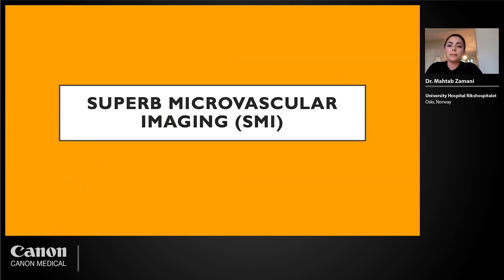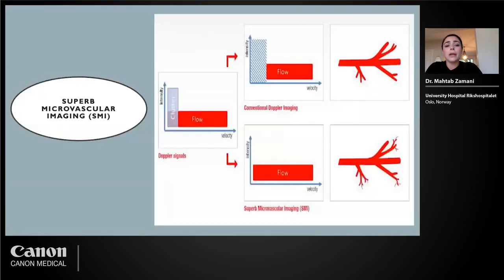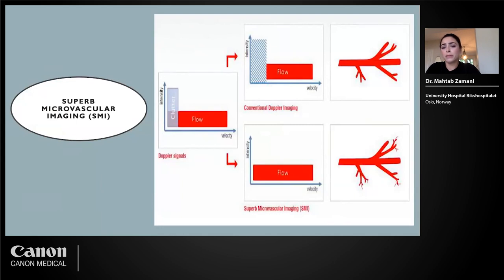Superb Microvascular Imaging (SMI) is a new method developed to overcome the limitations of conventional Doppler. It uses an exclusive algorithm — software on a normal Doppler machine — which successfully removes artifact and clutter arising from nearby structures while at the same time preserving the microvasculature. This is visible in comparison images: whereas conventional Doppler cannot show this microvasculature or low-velocity blood flow seen in intraplaque neovascularization, SMI clearly reveals it.